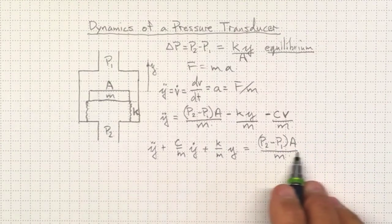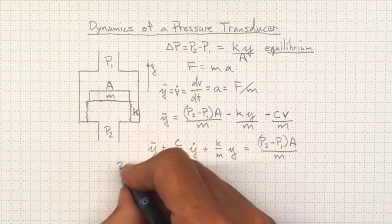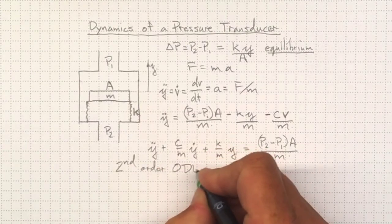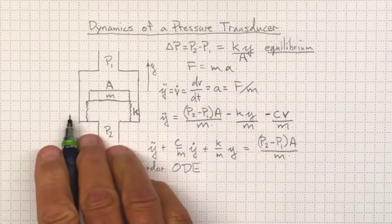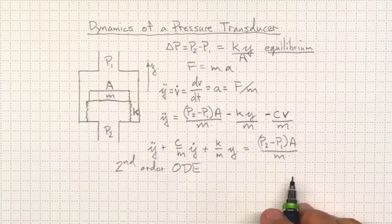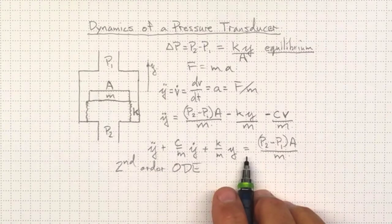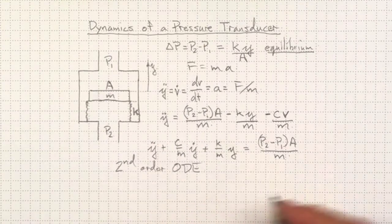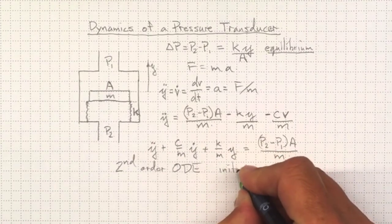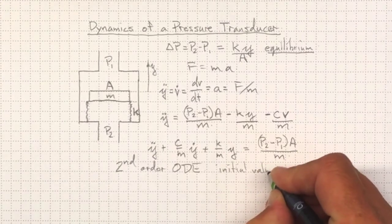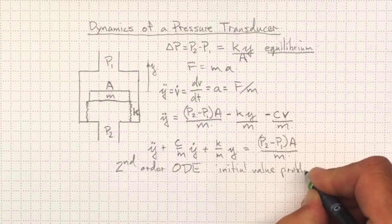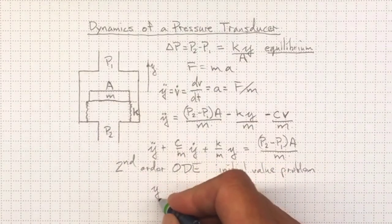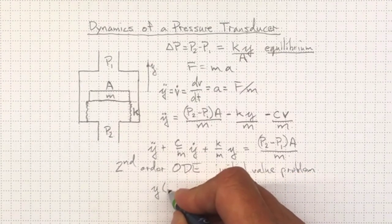So if we could just solve this second order ordinary differential equation, then we could find out how the system is moving with time. Now if it's a second order ordinary differential equation, we're also going to need to know something about our starting conditions. So it's an initial value problem. So to solve this, we're going to have to be able to specify Y as a function of T eventually. But to start off with, we'll have to be able to specify what Y zero is equal to.